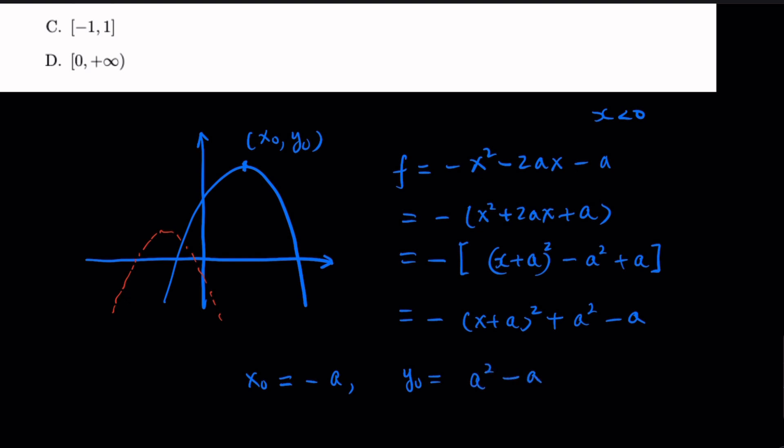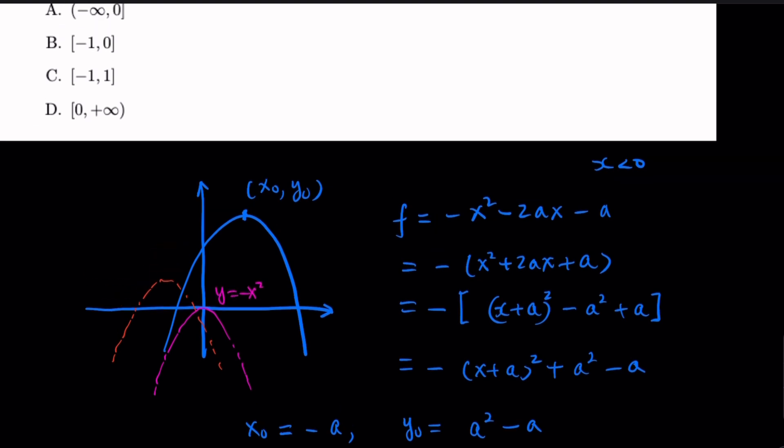Now some special value here. When a equals 0, then this term goes away. This function becomes negative x squared. So it would be something like this. This would be y equal negative x², right? So this is the left-hand side.